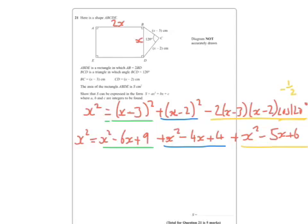Simplify all that, I get X squared equals 3X squared minus 15X plus 19.